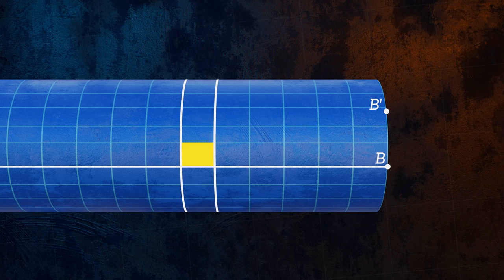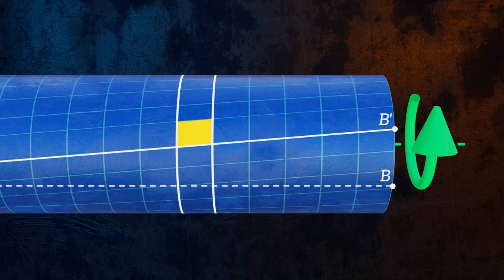on the surface of our bar deforms. The element is initially rectangular, but when the torque is applied it gets distorted. Let's take a closer look.